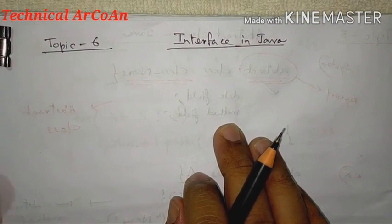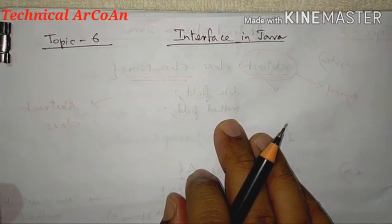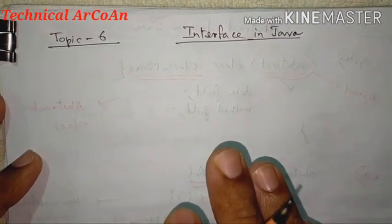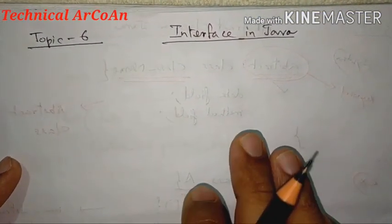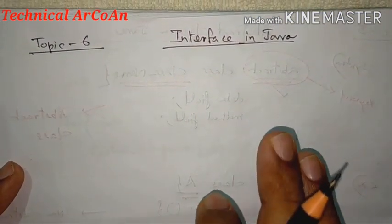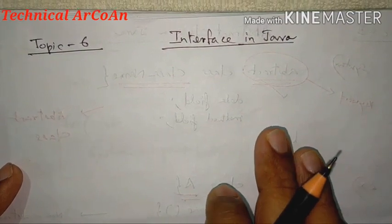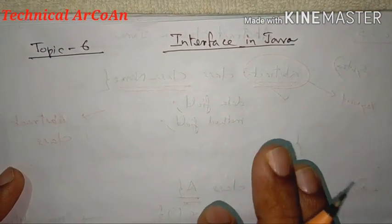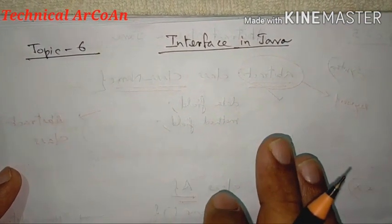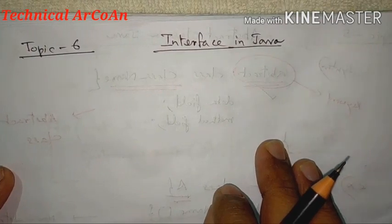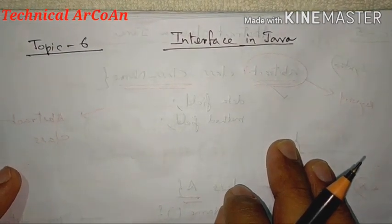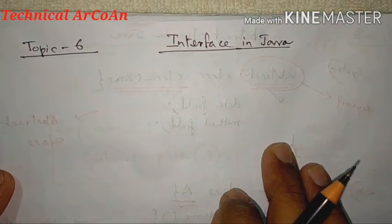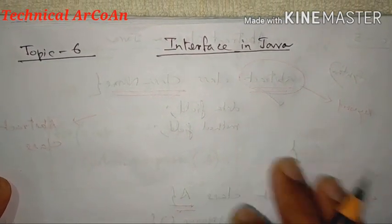What is an interface? An interface is a completely 100% abstract class. It is similar to a class with a collection of abstract methods.